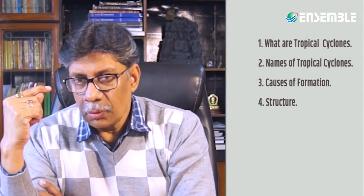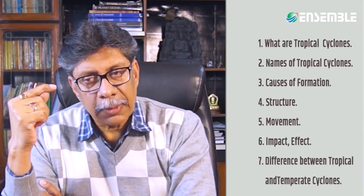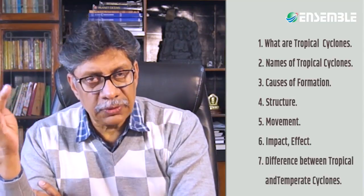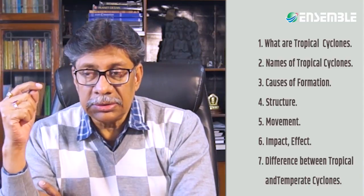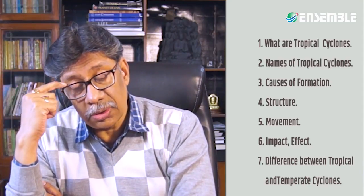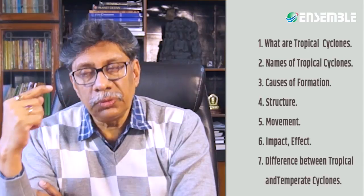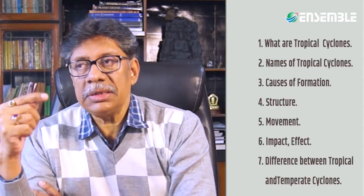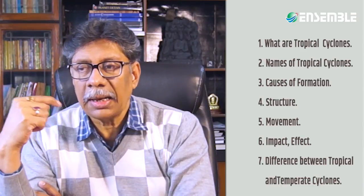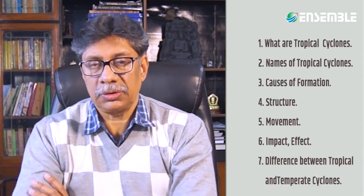One form of secondary atmospheric circulation is tropical cyclones. There are several aspects of tropical cyclones that need to be studied: first, what are tropical cyclones; second, how they are known in different places and how they are named; third, the causes and mechanism of formation; fourth, the structure; fifth, the movement; and sixth, the effects of tropical cyclones.